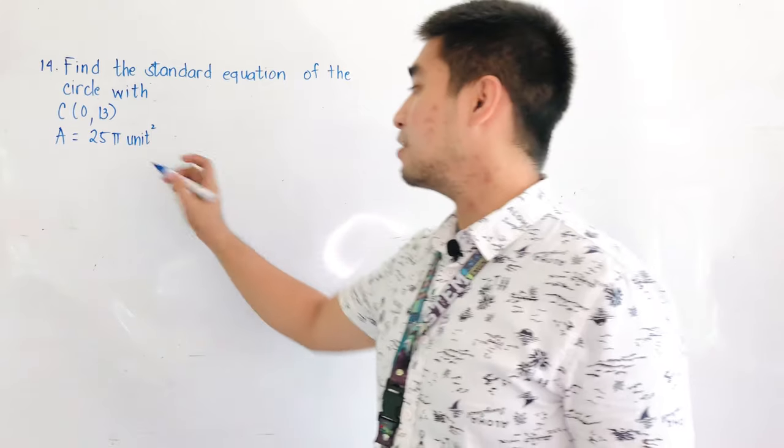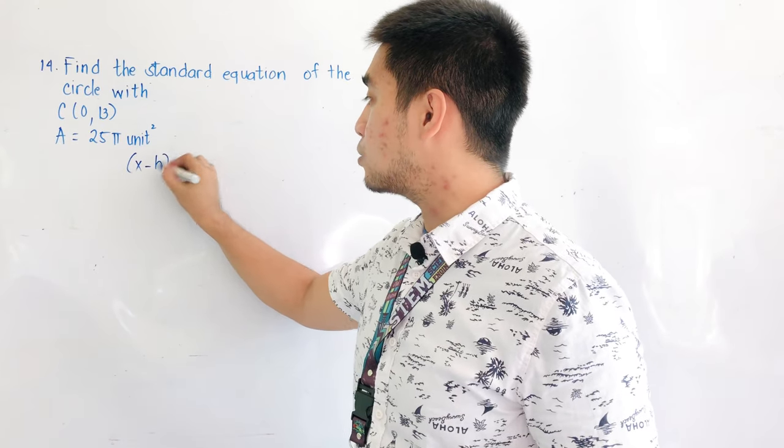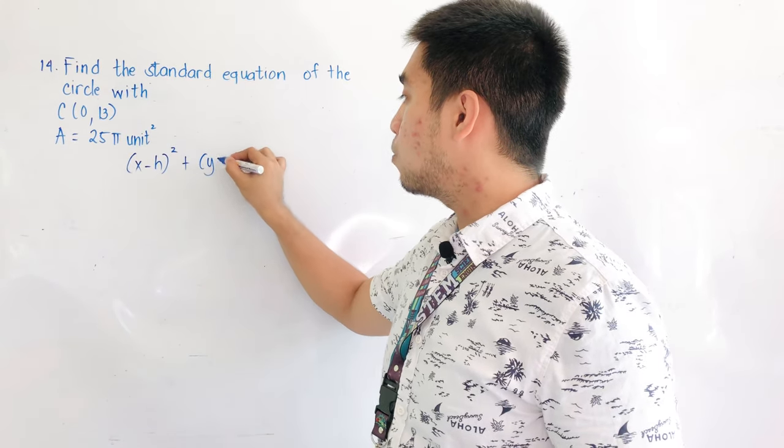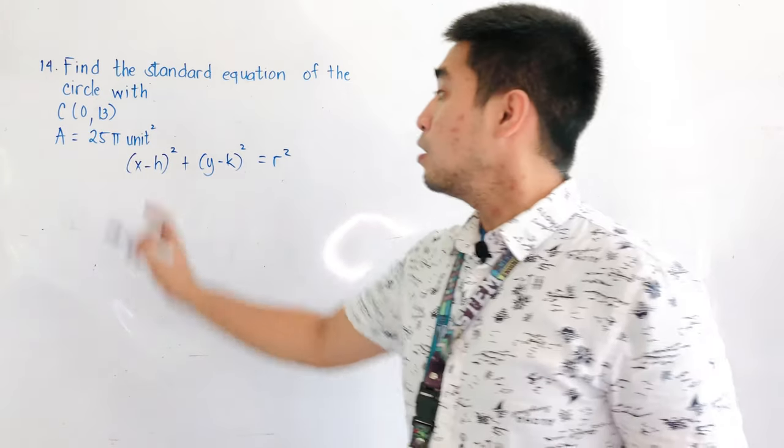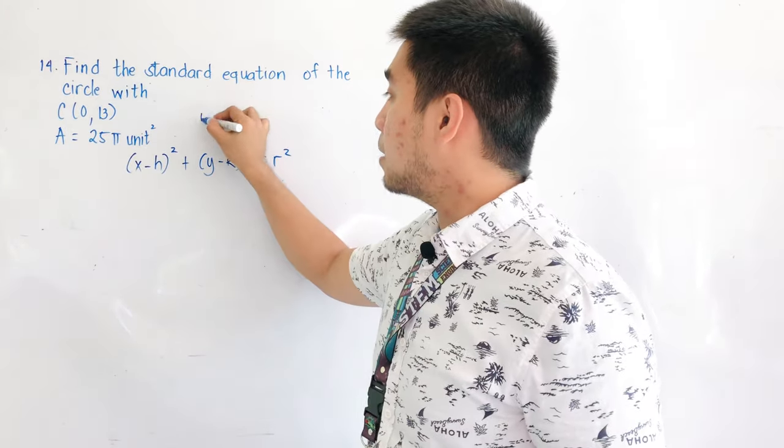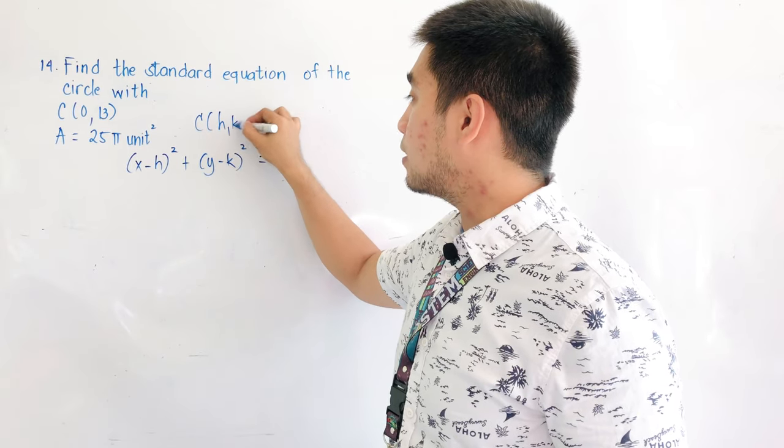always remember that our standard equation is x minus h quantity squared plus y minus k quantity squared is equal to r squared. We have the center. Always remember that the center is located at point h and k.